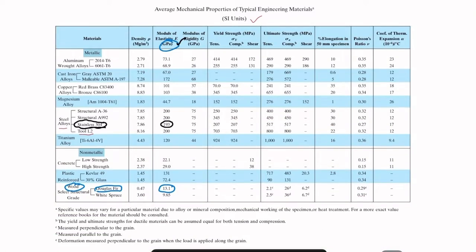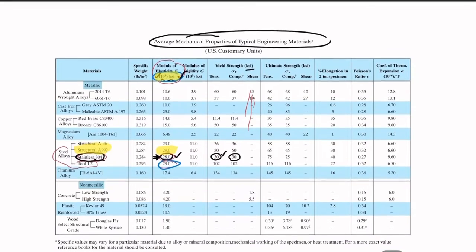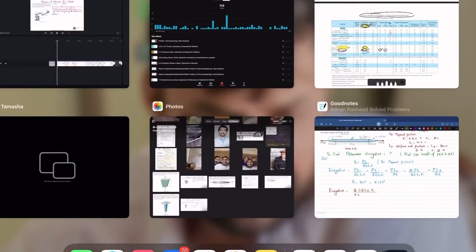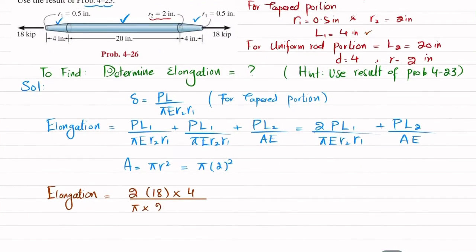E is not known. From property table you will go to the book and you will go to the property table at the end. You can see that this is the property table in US customary, and here you can see A992 having value 29 into 10 raised to power 3 ksi.